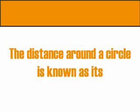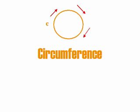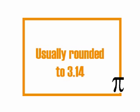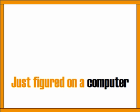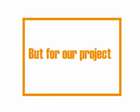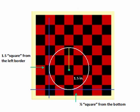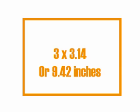The distance around the circle is known as its circumference. The circumference equals the diameter times pi. Usually when working with pi we round it to 3.14, or you figure it on a calculator or spreadsheet. For our project — cutting a three-inch diameter hole — the radial arm travels three inches times 3.14, giving us 9.42 inches. That's the circumference, the actual travel distance around the outside of the circle.